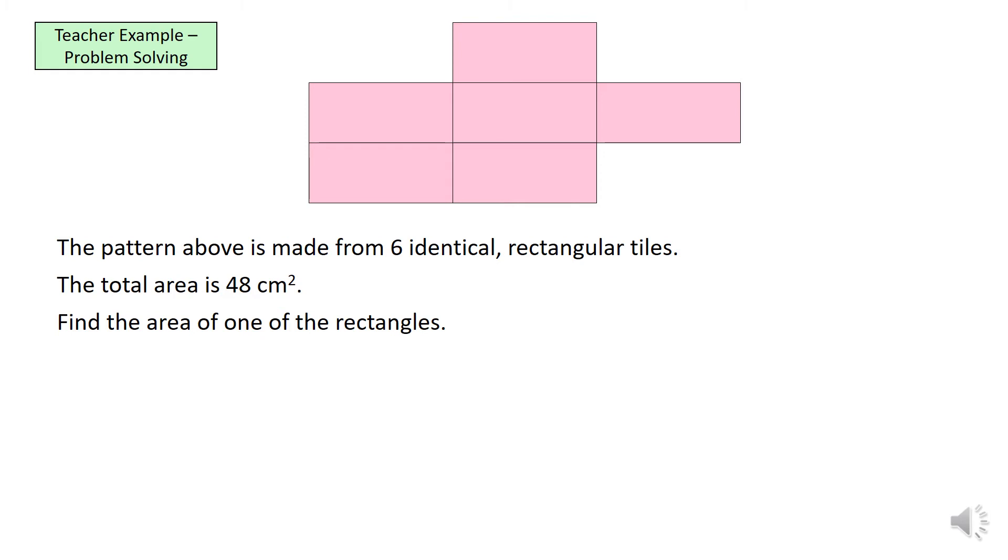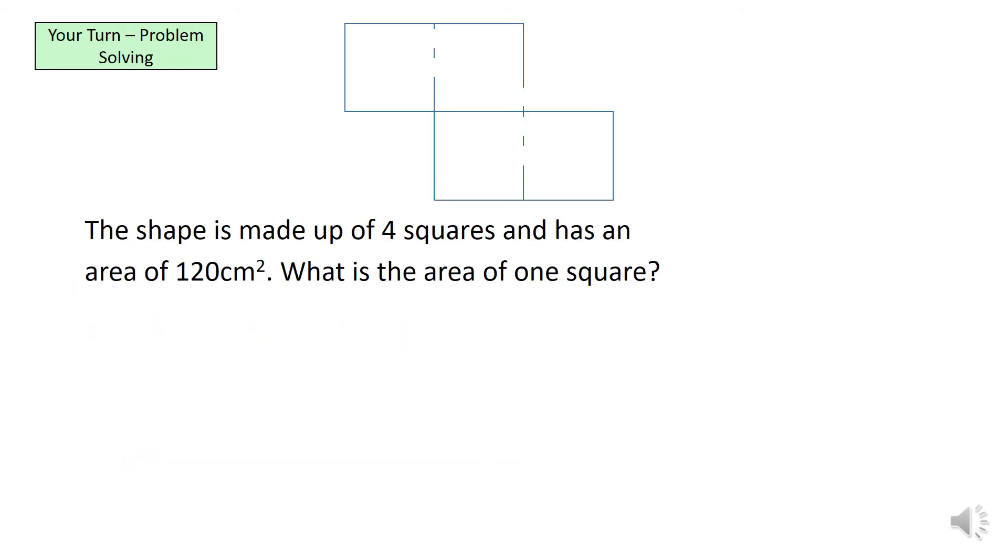If you read the question, the pattern above is made from 6 identical rectangular tiles and the total area is 48 cm². We want the area of just one of those rectangular tiles. So the first thing we do is if we know that the 6 of them equal 48, we can call rectangle R to start with. And as I said, 6 of them equal 48. So we can say 6R representing rectangles equals 48. And again, it's a simple one-step equation. The more difficult part was actually creating the equation. Okay, so now we can just divide them both by 6 and it will tell us that R equals 8 cm. So the area of one rectangle is 8 cm². Okay, I want you guys to pause the video now and have a go at this question.